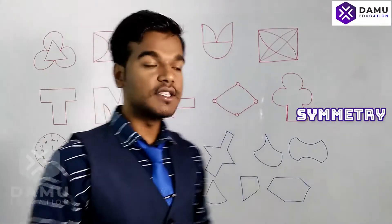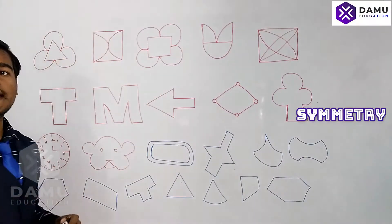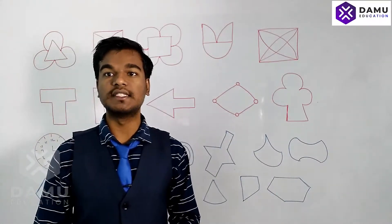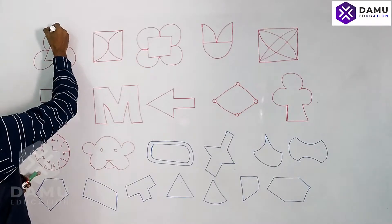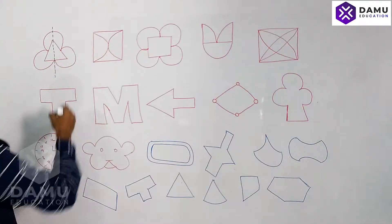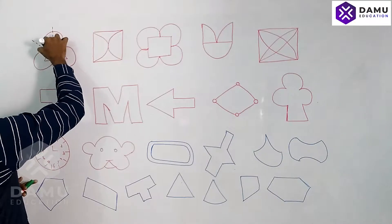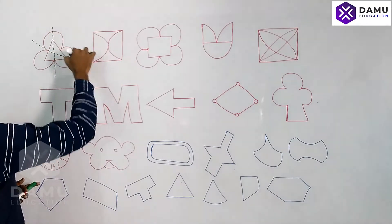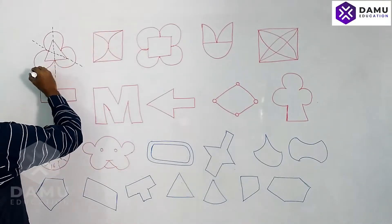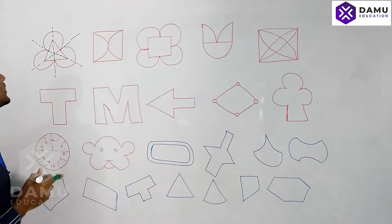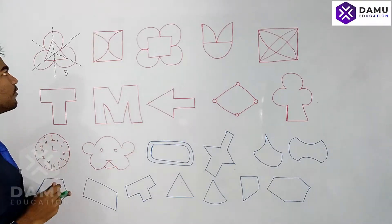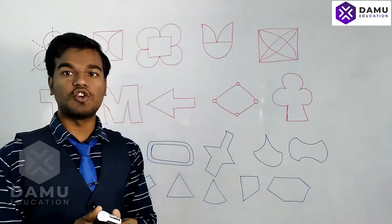Our first shape is a triangle. For a triangle, how many lines of symmetry are there? There are three lines of symmetry — each line goes from one vertex to the midpoint of the opposite side. So three lines of symmetry exist for a triangle. If you fold along that line, the two halves will coincide.